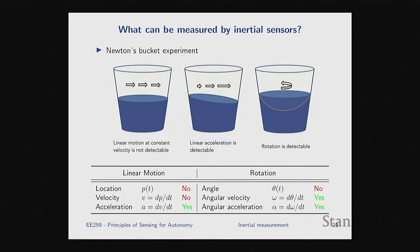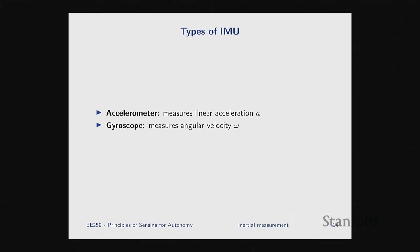For rotational motion: as soon as you start rotating the bucket about its axis, the water surface becomes a bowl shape, giving a signal we can use to indirectly measure rotational motion. This thought experiment tells us the kinds of things inertial sensors can and cannot measure.